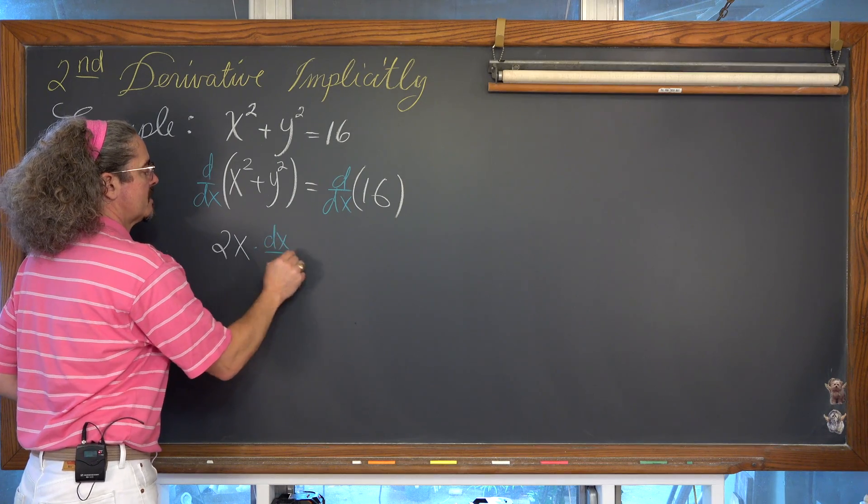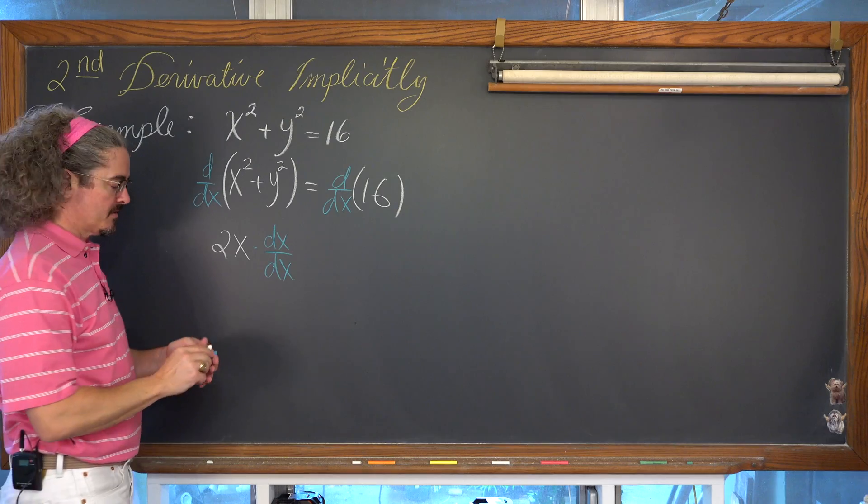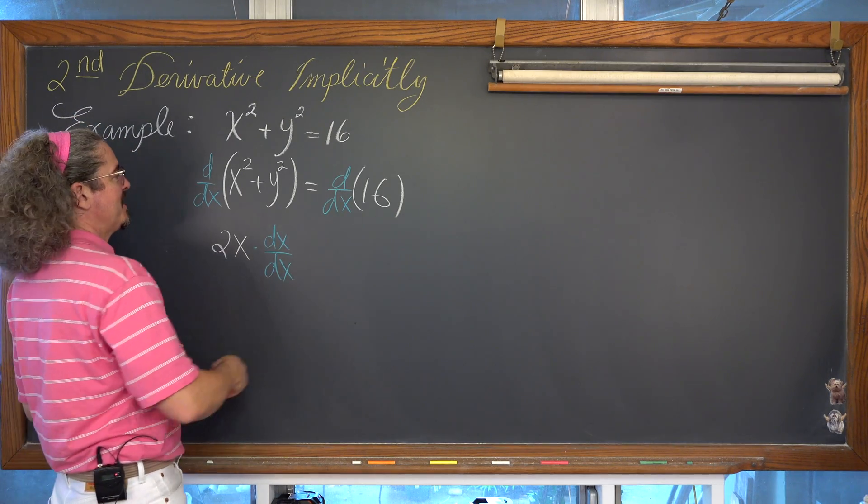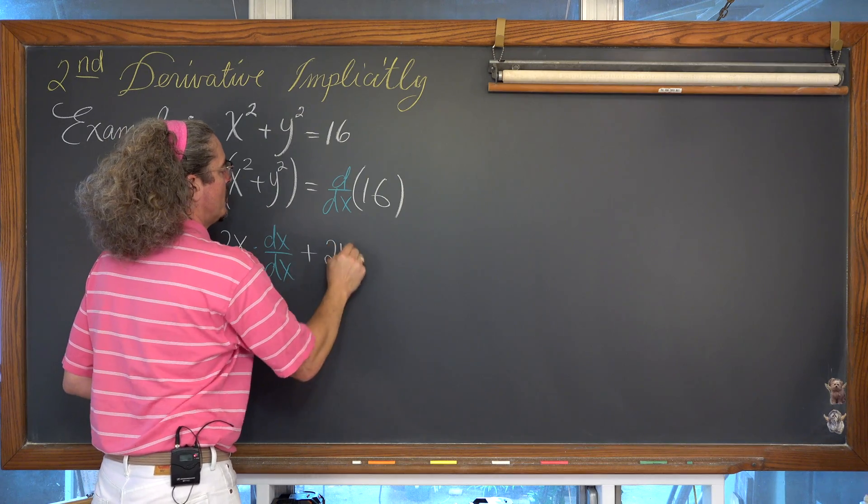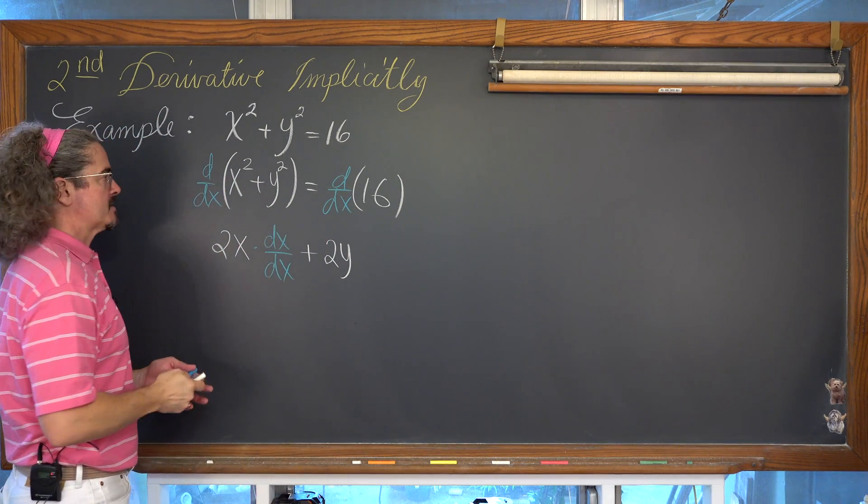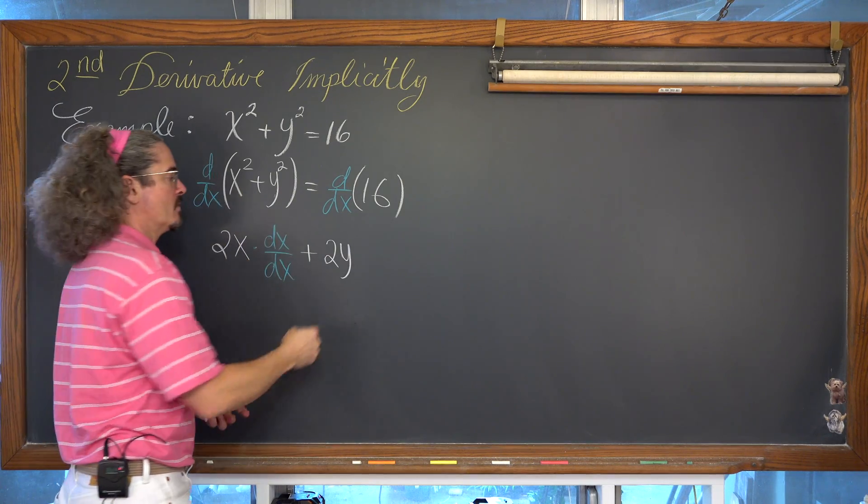Take the derivative of the inside function with respect to x. Well, that dx over dx is going to cancel. That's why there's no x prime. On the second term, we're going to bring the power of 2 down. So 2y then to the first, paying attention to what is inside that power of 2 and finishing the chain rule.